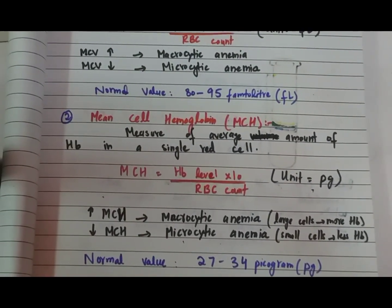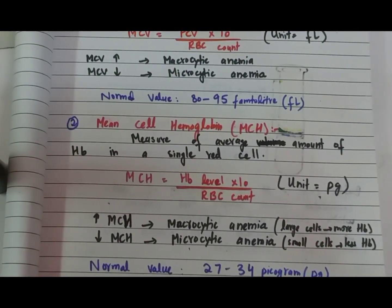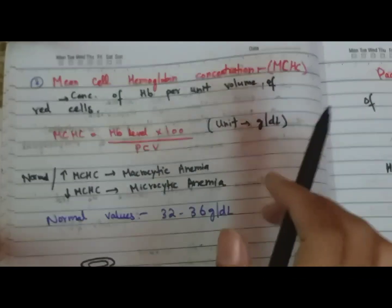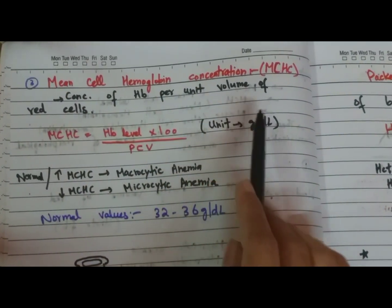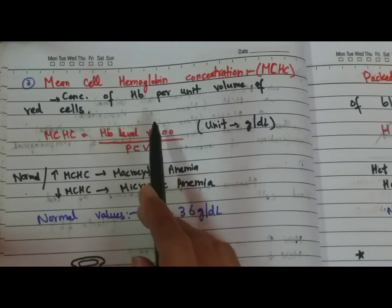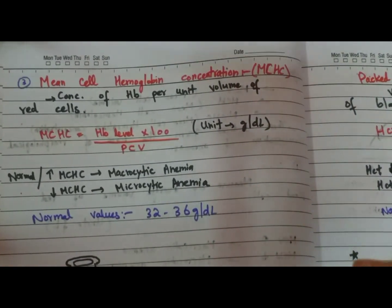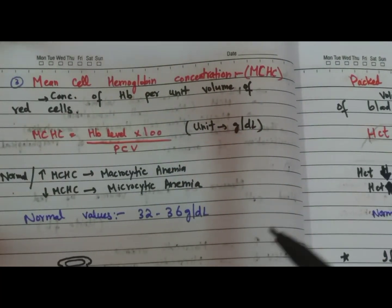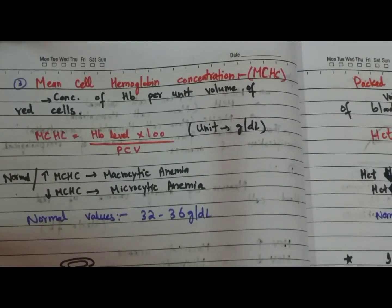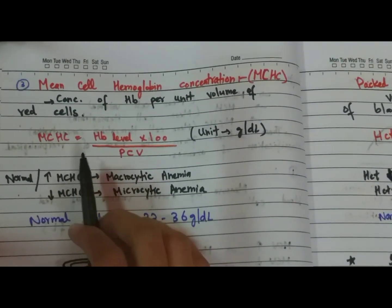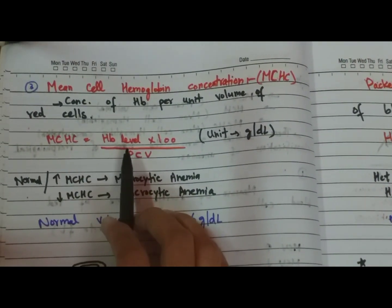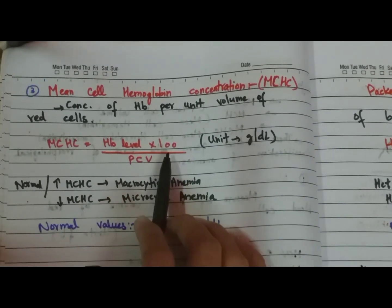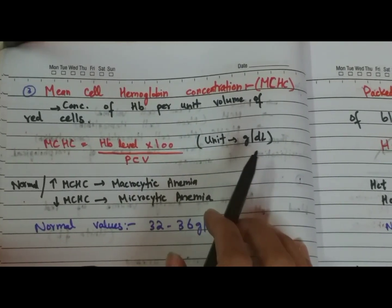From an exam point of view, red cell indices are very important and have appeared in past papers. The next index is mean cell hemoglobin concentration — the concentration of hemoglobin per unit volume of red cells. The formula is: hemoglobin level divided by packed cell volume, multiplied by 100. The unit is gram per deciliter.